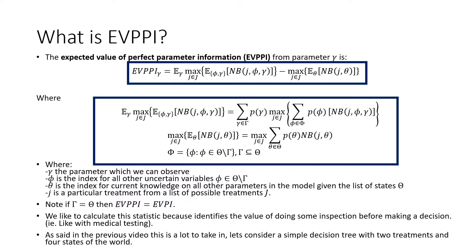So the expected value of perfect parameter information from parameter gamma is defined as follows. That is the expected value with perfect parameter information on gamma minus the expected value without that perfect information. So you'll be picking the right treatment with only knowledge of the average outcome.